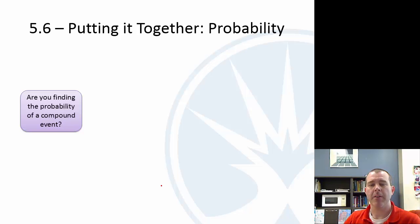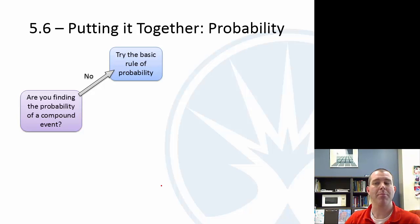With probability, the question you have to ask yourself first of all is: is it a compound event? Could more than one thing be happening? If it's not, just try the basic rule of probability where you count how many ways can that happen and divide by the total number of options.